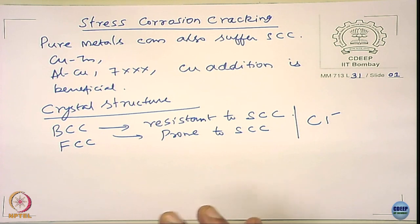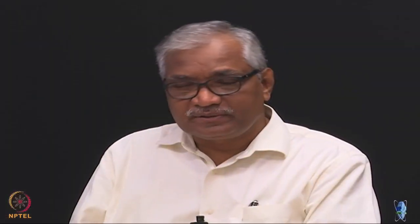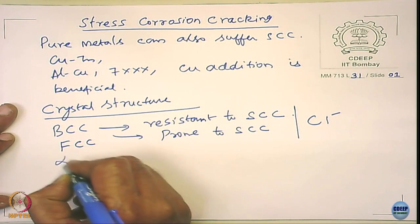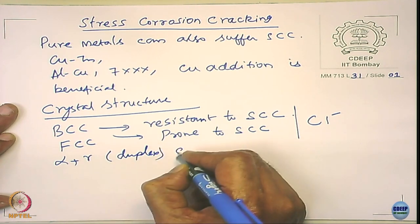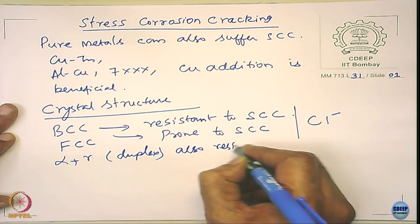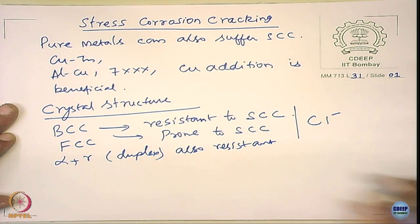Even in the case of austenitic grade stainless steels, chlorides in seawater per se are not prone to SCC — it undergoes pitting, no doubt. But if you lower the pH into the acidic range, or raise the temperature beyond 50–60 degrees Celsius, then chlorides promote SCC. The ferritic stainless steel, being BCC, is not prone to stress corrosion cracking. Duplex stainless steels, with alpha plus gamma phases, are also resistant to SCC.